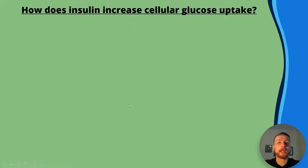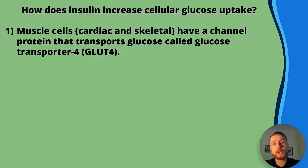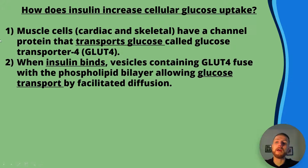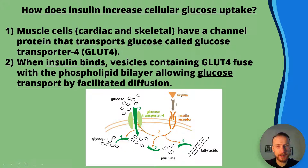How does insulin increase cellular glucose uptake? Muscle cells have a channel protein called glucose transporter 4, or GLUT4, that transports glucose. When insulin binds, vesicles containing GLUT4 fuse with the phospholipid bilayer, allowing glucose transport by facilitated diffusion. So insulin binding to its receptor causes GLUT4 insertion, glucose enters the cells lowering blood glucose, and that glucose can then be used to produce glycogen via glycogenesis.